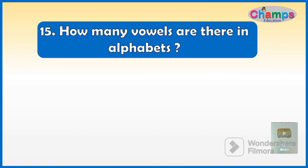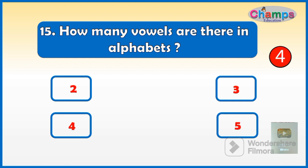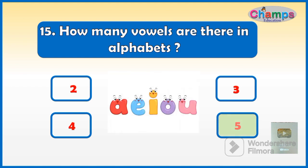How many vowels are there in the alphabet? Your options are: Two, Three, Four, Five. And your time starts now. And the correct option is Five.